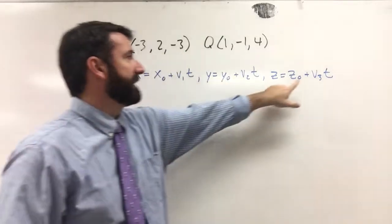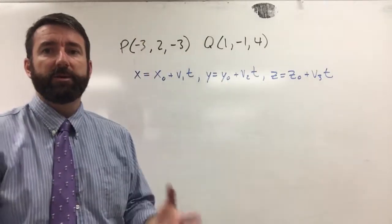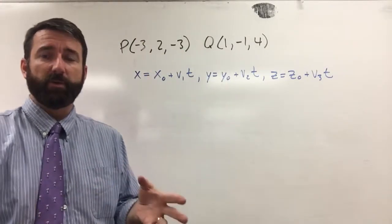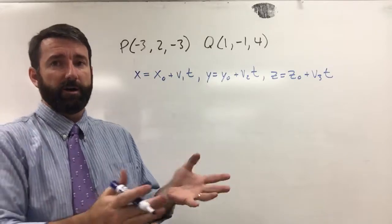Where x₀, y₀, z₀ are the coordinates—the x, y, and z coordinates for some point on the line.